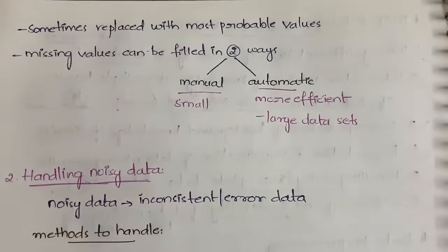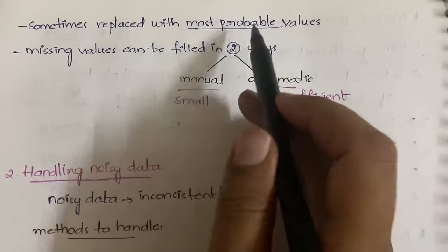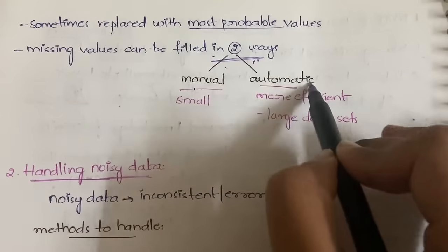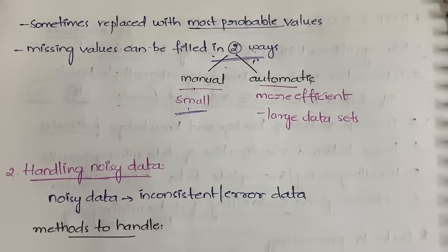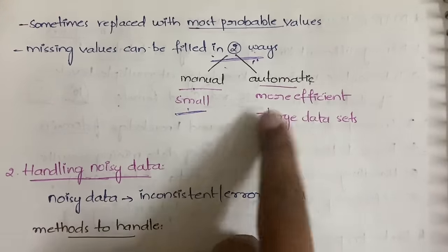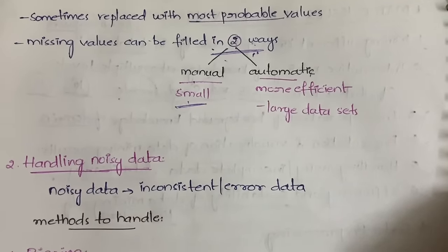You can also replace missing values with the most probable values — values that have the highest chance of occurring. Missing values can be filled in two ways: manually, which works only for small datasets where you identify and fill empty spaces yourself; or automatically, which is more efficient and suited for large datasets.